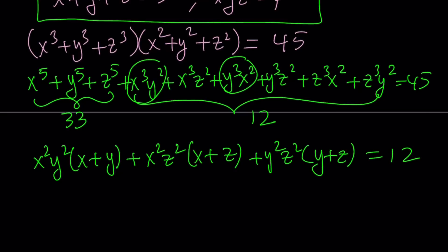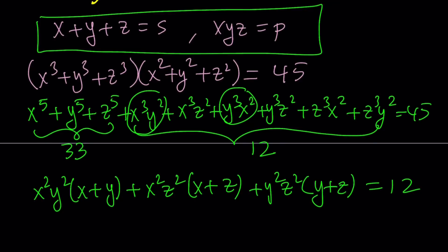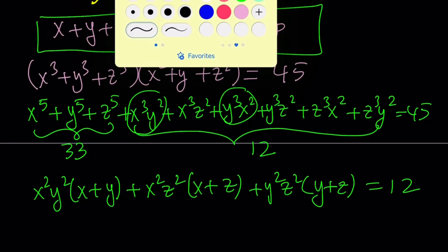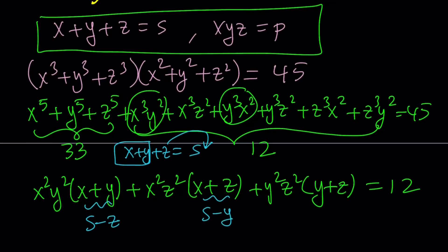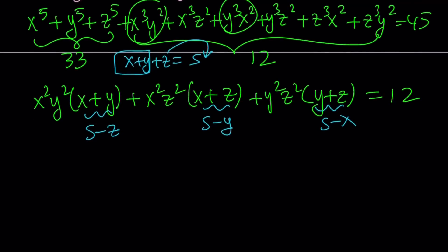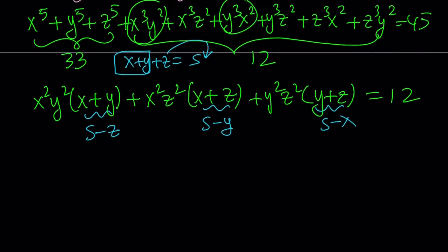Now we have x plus y, x plus z, and y plus z, but we can use s to write them in terms of something. So I'm going to replace x plus y with s minus z, since x plus y plus z equals s. Similarly, x plus z can be written as s minus y, and y plus z as s minus x. So this gives us something nice — let's go ahead and put those together.